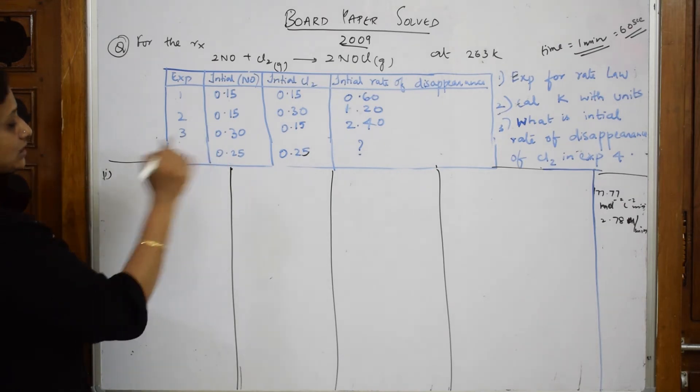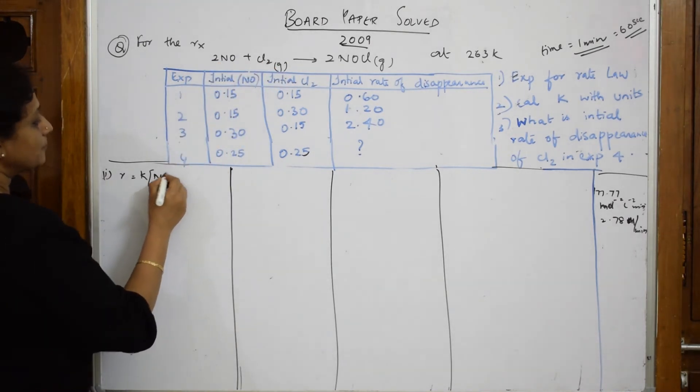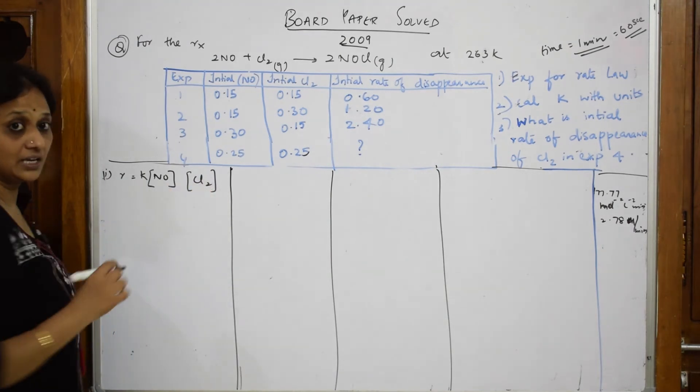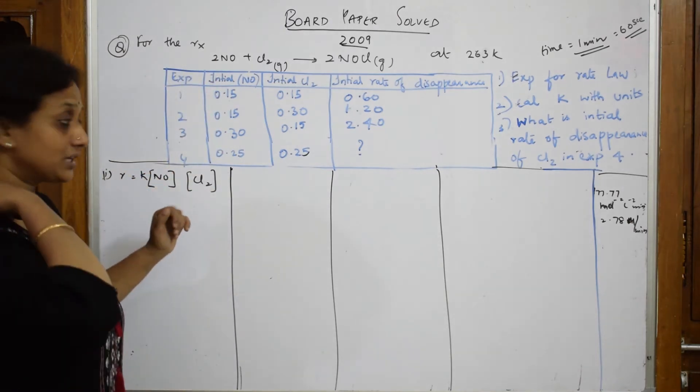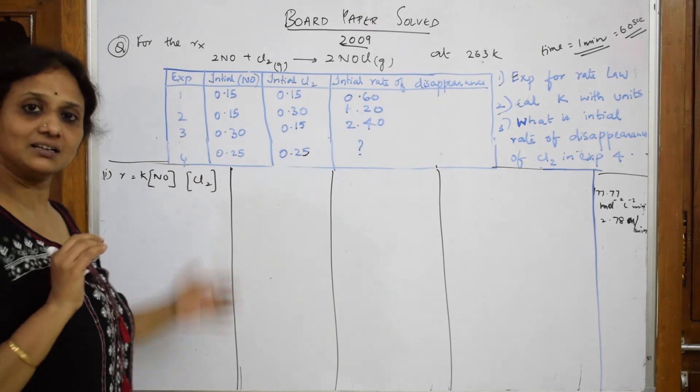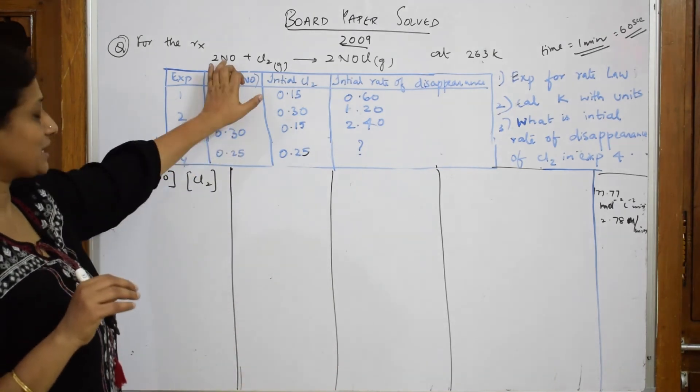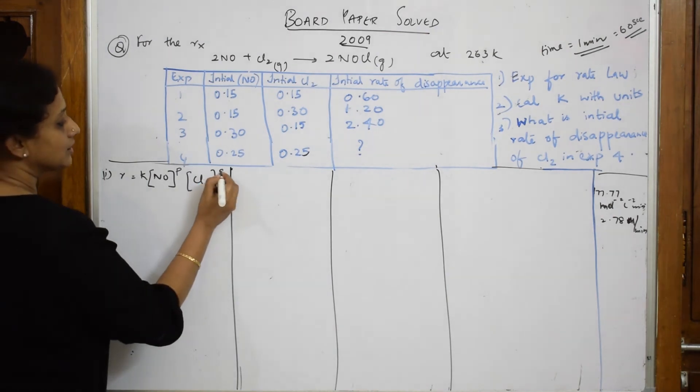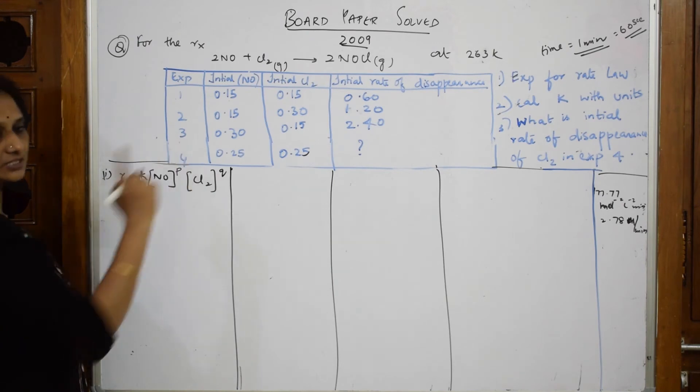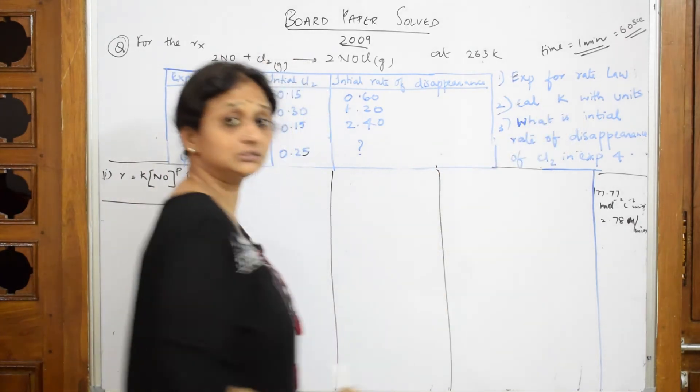First, I have to write the expression for rate law. Most of the equations will start with this question only: rate law expression, then rate constant, and if required, half life also. I am going to write the rate law. Rate is equal to K into concentration of the reactant into concentration of the mixed reactant, NO and Cl₂. Remember one important thing: they have asked you to write the rate law, but don't try to write the coefficients immediately because we are supposed to prove using this data the coefficients. Take the coefficient of NO as P and Q for Cl₂. This is your rate, one mark. I have to solve the next.